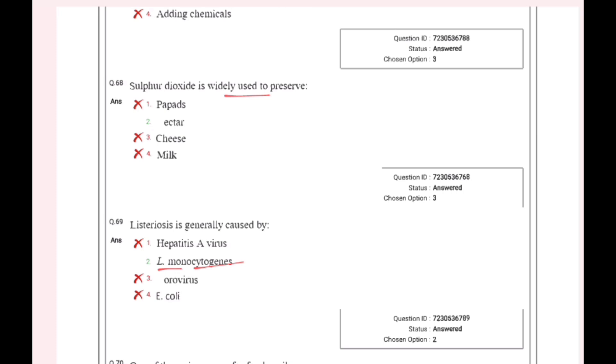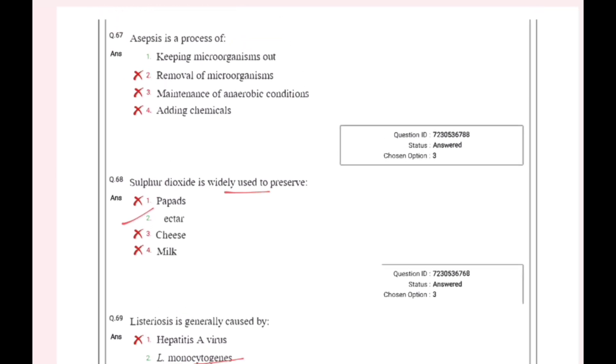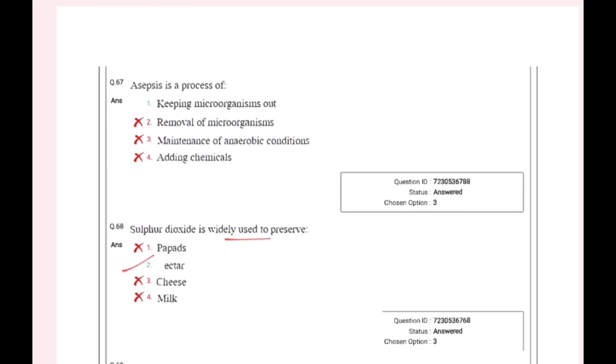UCR — it's called preservatives. Acetyosis is a process of microorganisms.